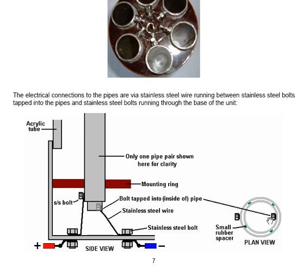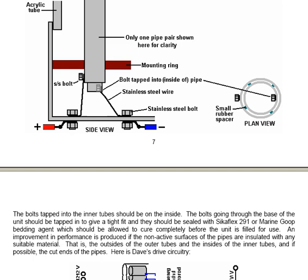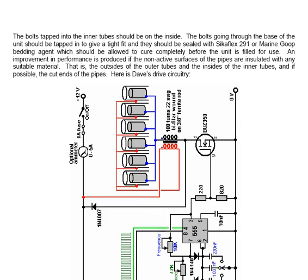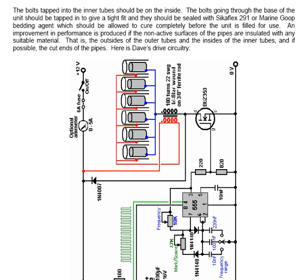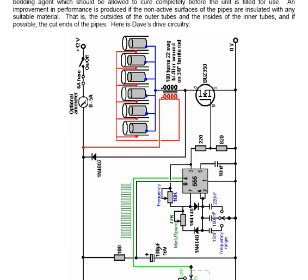That's the way that Dave has opted to do the build on this particular design. The bolts tapped into the inner tube should be on the inside. The bolts going through the base of the unit should be tapped in to give a tight fit and they should be sealed with Sikaflex 291 or Marine Goop bedding agent which should be allowed to cure completely before the unit is filled for use. An improvement in performance is produced if the non-active surfaces of the pipes are insulated with any suitable material. That is the outsides of the outer tubes and the insides of the inner tubes and if possible the cut ends of the pipes.